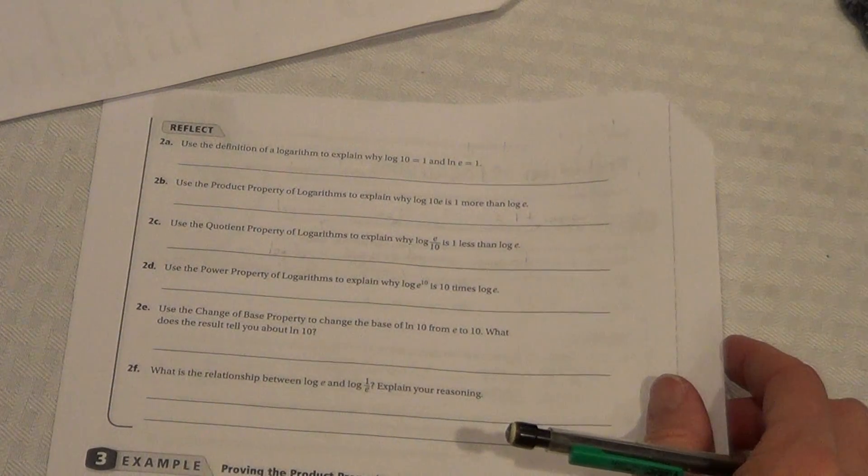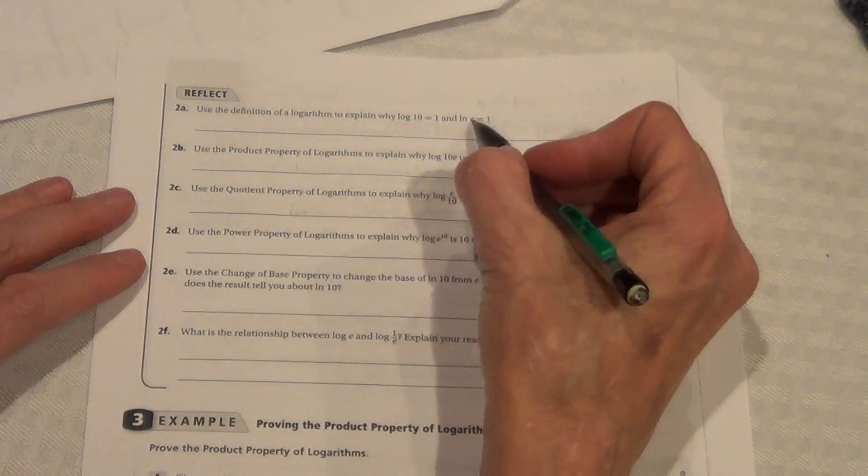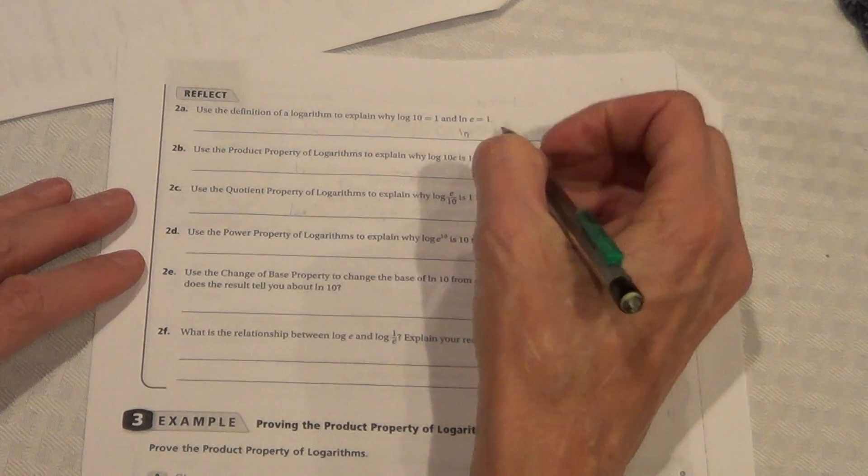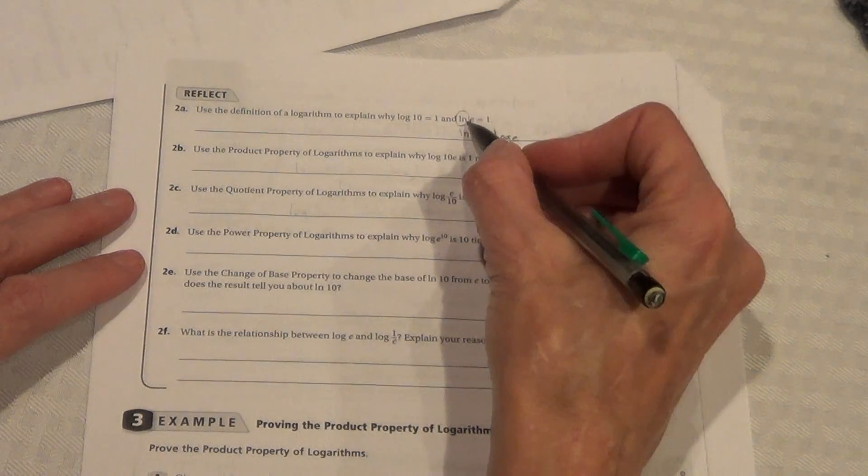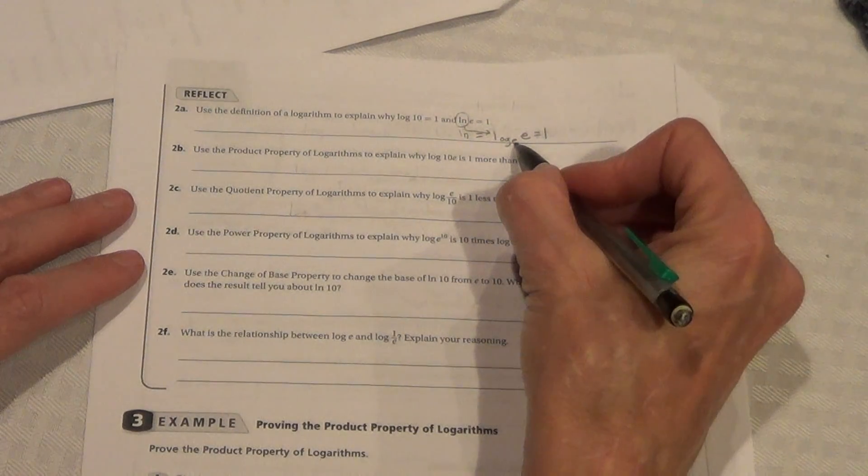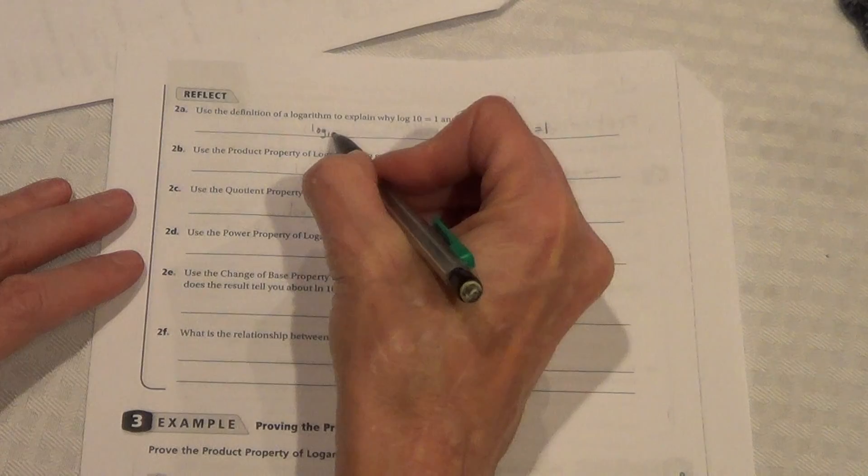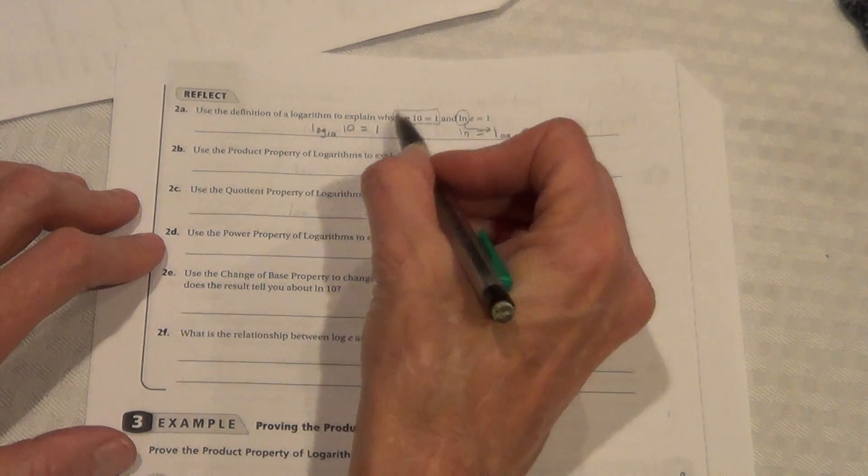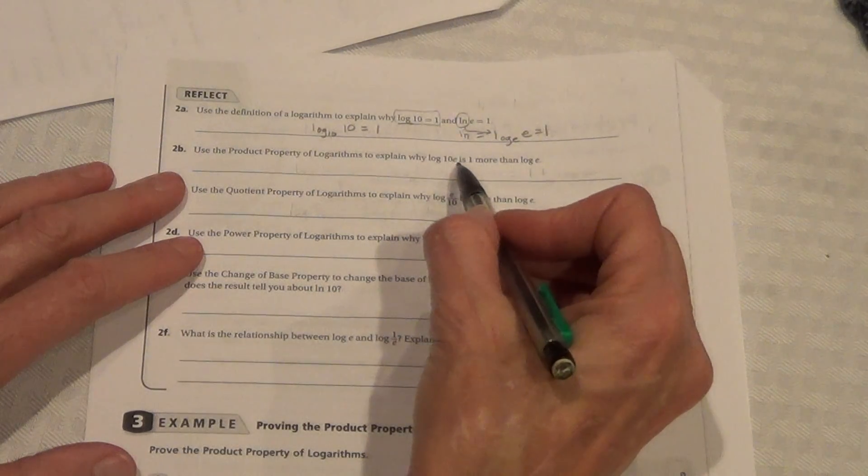Now, they want us to recall using the definition of a logarithm to explain why log 10 equals 1 and ln e equals 1. Well, we know that ln is the abbreviation we use for log e. So, if we change the ln over to log e, we would have log e of e equals 1. Well, what power of e will equal e? It would be the first power. Log 10, how can that equal 1? Well, again, it's log base 10 of 10. Because we were told in the last lesson, when we have log 10, we just write it as log with no number under there. So, 10 to the first power equals 10.